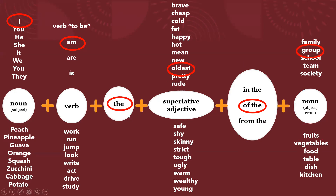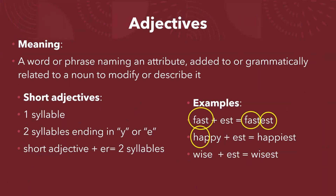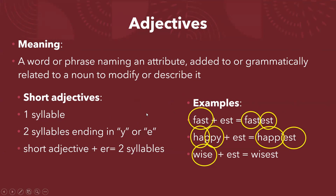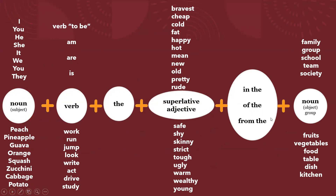Chicos, hasta aquí. Si se dan cuenta, la estructura que teníamos inclusive en el anterior la veíamos — veíamos la diferencia. ¿Qué hacíamos cuando hacíamos comparativos? Agregábamos el E-R para adjetivos cortos, para darnos como resultado una comparación entre dos. Bien, para superlativos, ese E-R se cambia por el E-S-T. Ya no va a ser 'yo soy más alto que Juan', sino que, como es un superlativo, sería 'yo soy el más alto, el más rápido'. Por eso hacemos esta estructura.